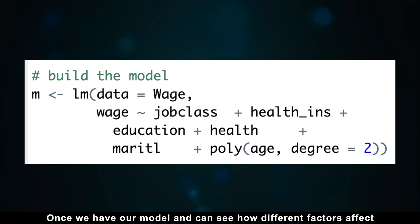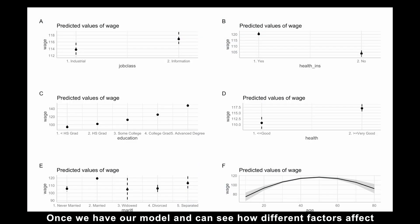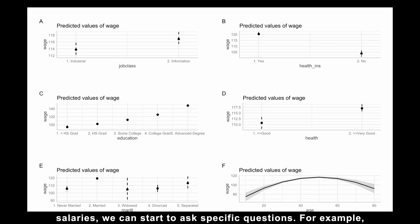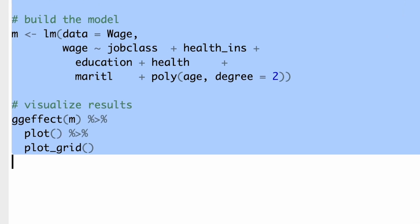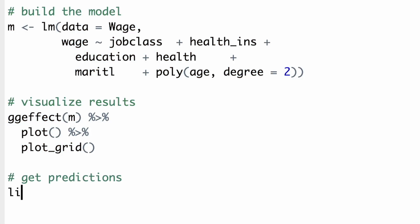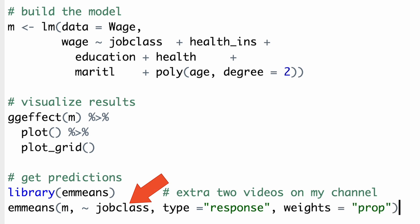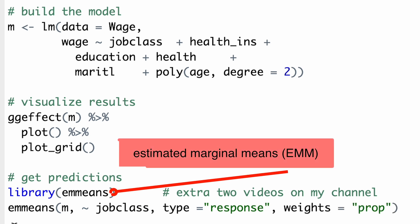Once we have our model and can see how different factors affect salaries, we can start to ask specific questions. For example, if our goal is to maximize our salary by choosing the best-paying profession, we can use a technique called estimated marginal means to compare mean salaries across different job categories.